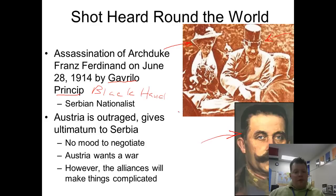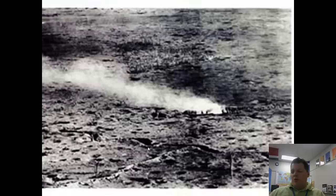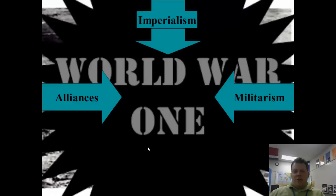Once it is clear that Franz Ferdinand is dead, Austria-Hungary is incredibly angry and basically threatens Serbia. Austria wants war, and now Austria's allies come to their aid while Serbia's allies come to hers. So when we look at all the causes of World War I — alliances, militarism, imperialism, nationalism — and with that spark, we have World War I.